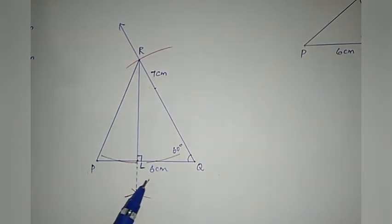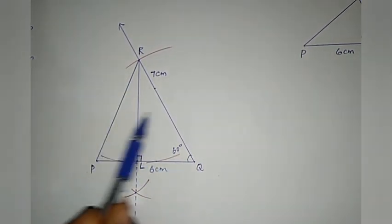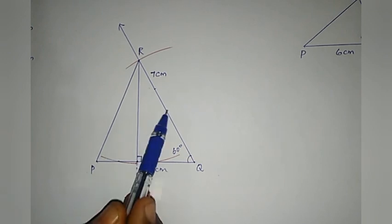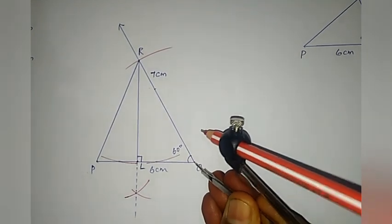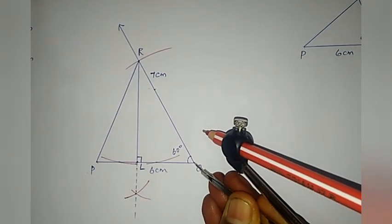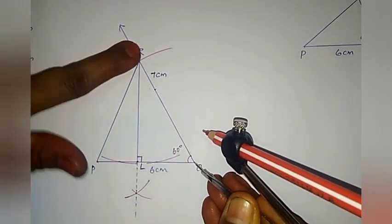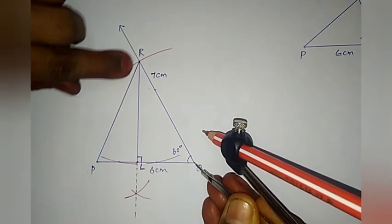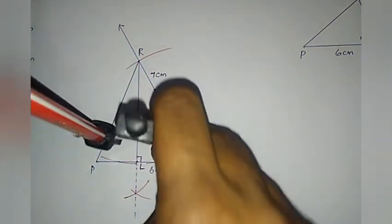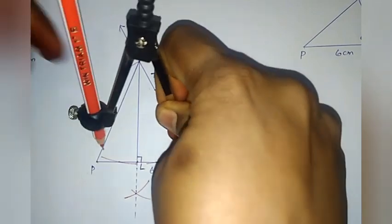The first altitude is now dropped. The remaining two sides of the triangle are PR and QR. Now we need to drop the second altitude. Check the construction.